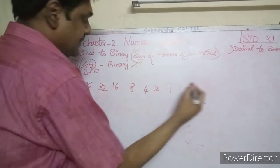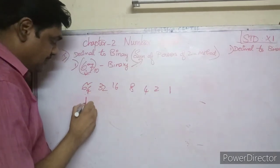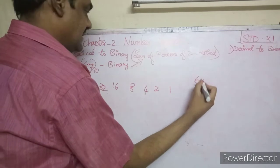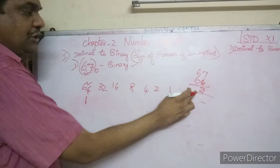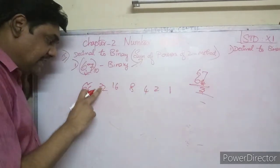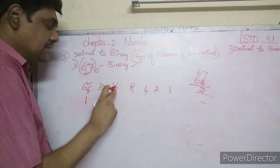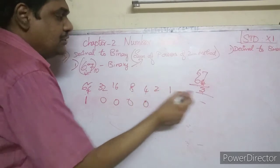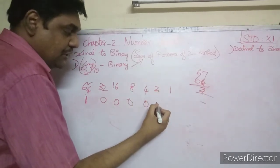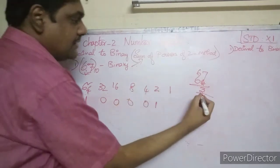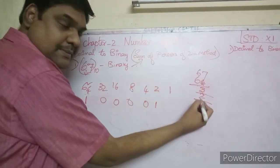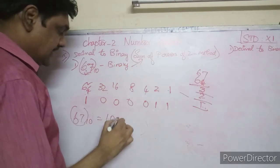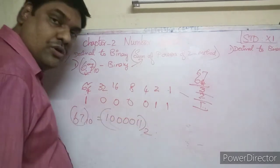Now let's verify with 67. Compare 67 and 64: 64 is the greatest power of 2 not exceeding 67, so put 1. Then 67 minus 64 is 3. Compare 3 with 32 — greater, so 0. Compare with 16 — greater, so 0. Compare with 8 — greater, so 0. Compare with 4 — greater, so 0. Compare 3 with 2: put 1, subtract 2, remainder 1. Compare 1 with 1: put 1. So 67 base 10 is equal to 1000011 base 2.